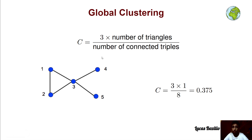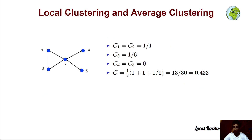So the global clustering is 3 multiplied by the number of triangles, which is 1, divided by the number of connected triples, which is 8 — giving us 3/8. Although, in NetworkX we are only able to compute the average clustering from the local clustering coefficient using the library's predefined functions.